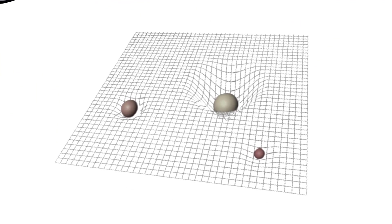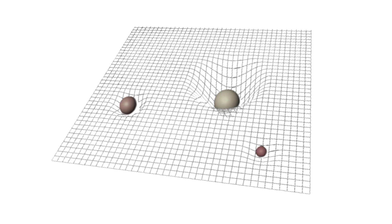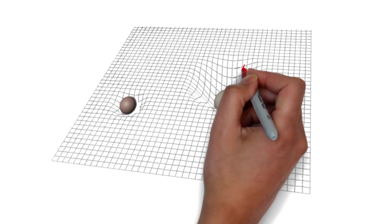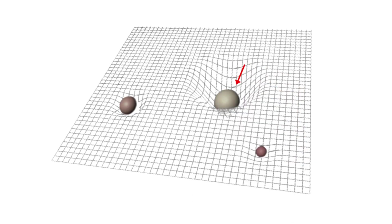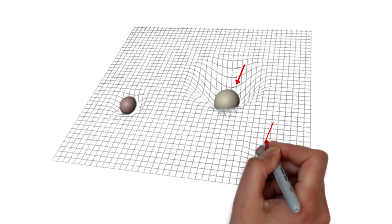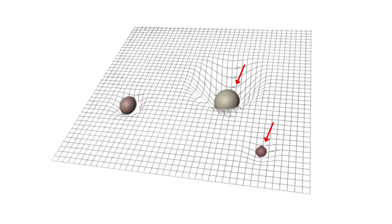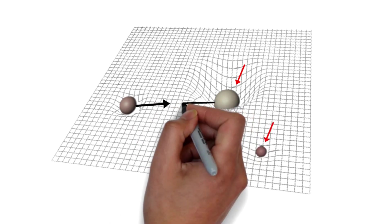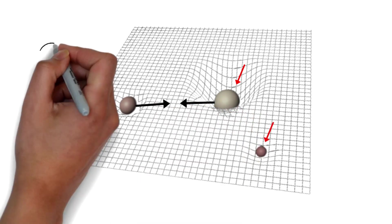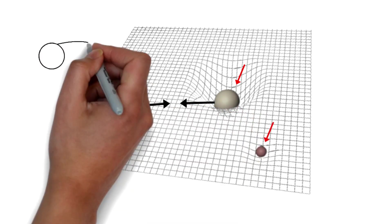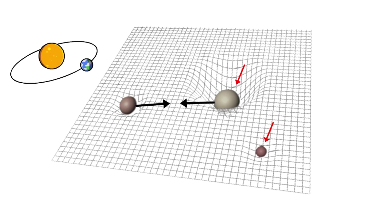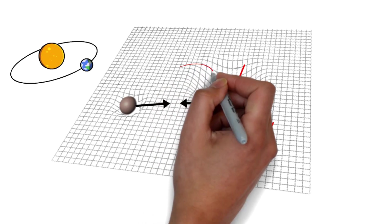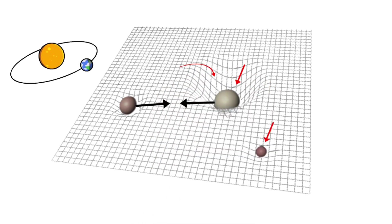Wherever there are matters in the universe, there will be curves in space-time. More matter will create more curvature, and less matter will create less curvature in space-time. For this curvature, the objects in the universe attract each other. This is why planets are orbiting the sun. This curvature is the source of gravity.